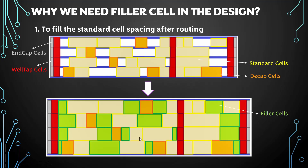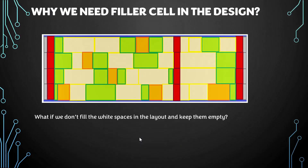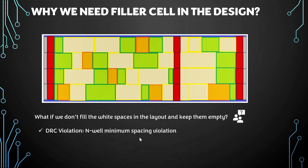But the question is: why can't we keep these white spaces empty? Why is it even required to fill these white spaces? The answer is to maintain minimum spacing DRC violations of N-well. Why do we need to maintain this N-well minimum spacing? Because of something called the well proximity effect.